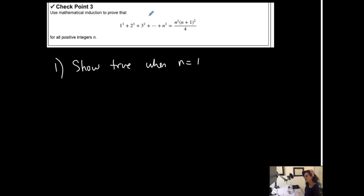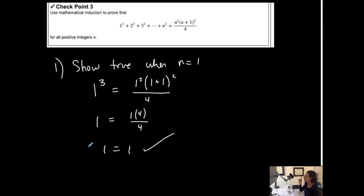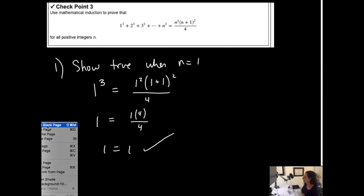The first term of the left-hand side is 1 to the third. We want that to be true when n is 1, so I'm going to replace all the n's with 1: 1 squared times (1+1) squared over 4. Let's see if this is true. 1 to the third is 1, and this simplifies into 1 squared which is 1, and then 2 squared which is 4 over 4 — therefore true.